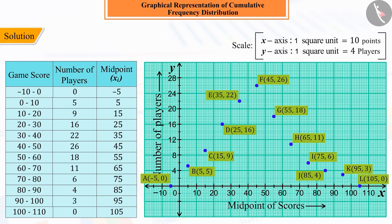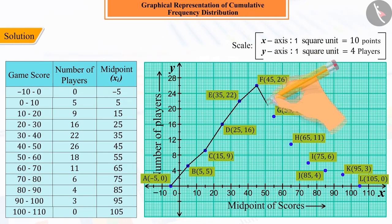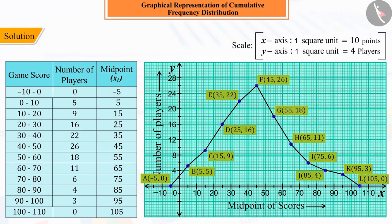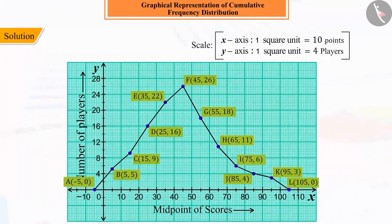Therefore, we will join all these points with a line segment and obtain the graph of the given frequency distribution: A, B, C, D, E, F, G, H, I, J, K, L.